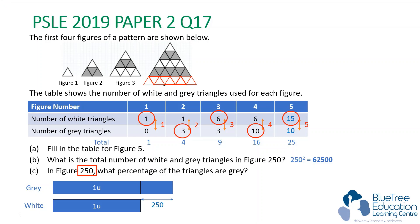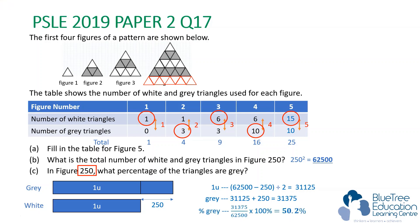We can find 1 unit: 1 unit is (62,500 − 250) ÷ 2 = 31,125. So the number of gray triangles is 31,125 + 250 = 31,375. The percentage of triangles that are gray is 31,375 ÷ 62,500 × 100% = 50.2%.